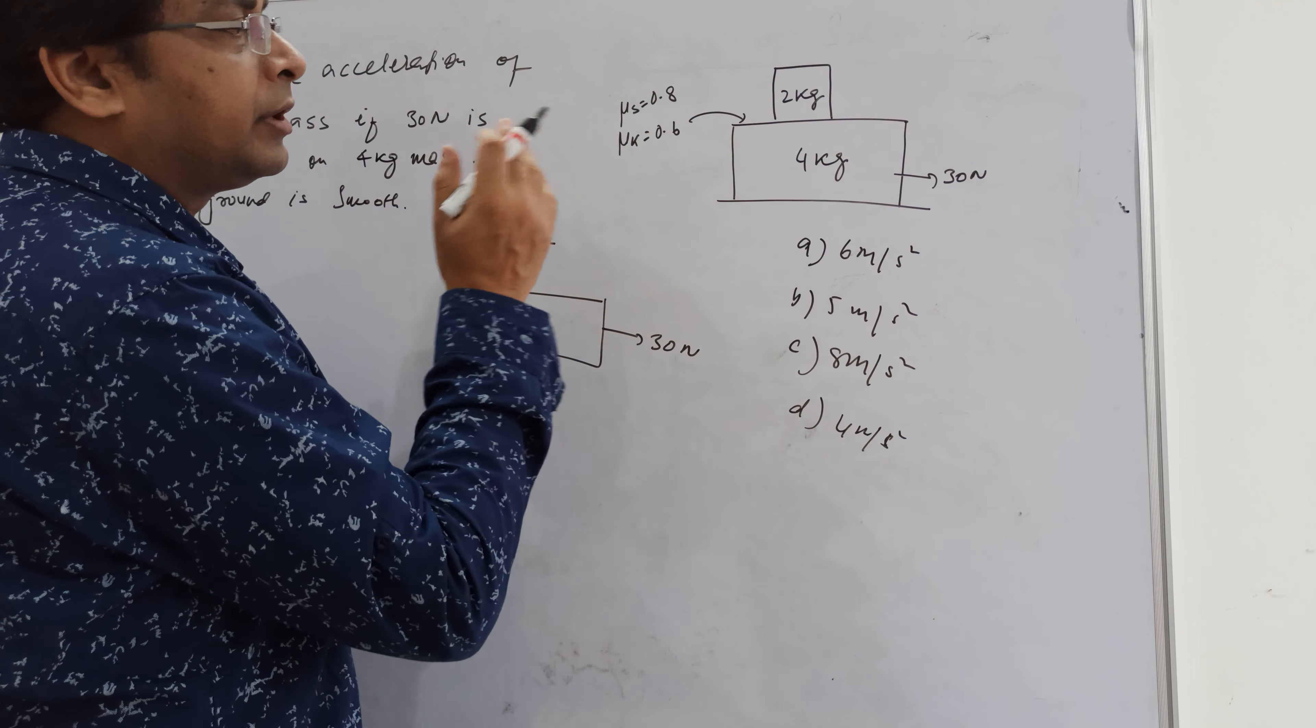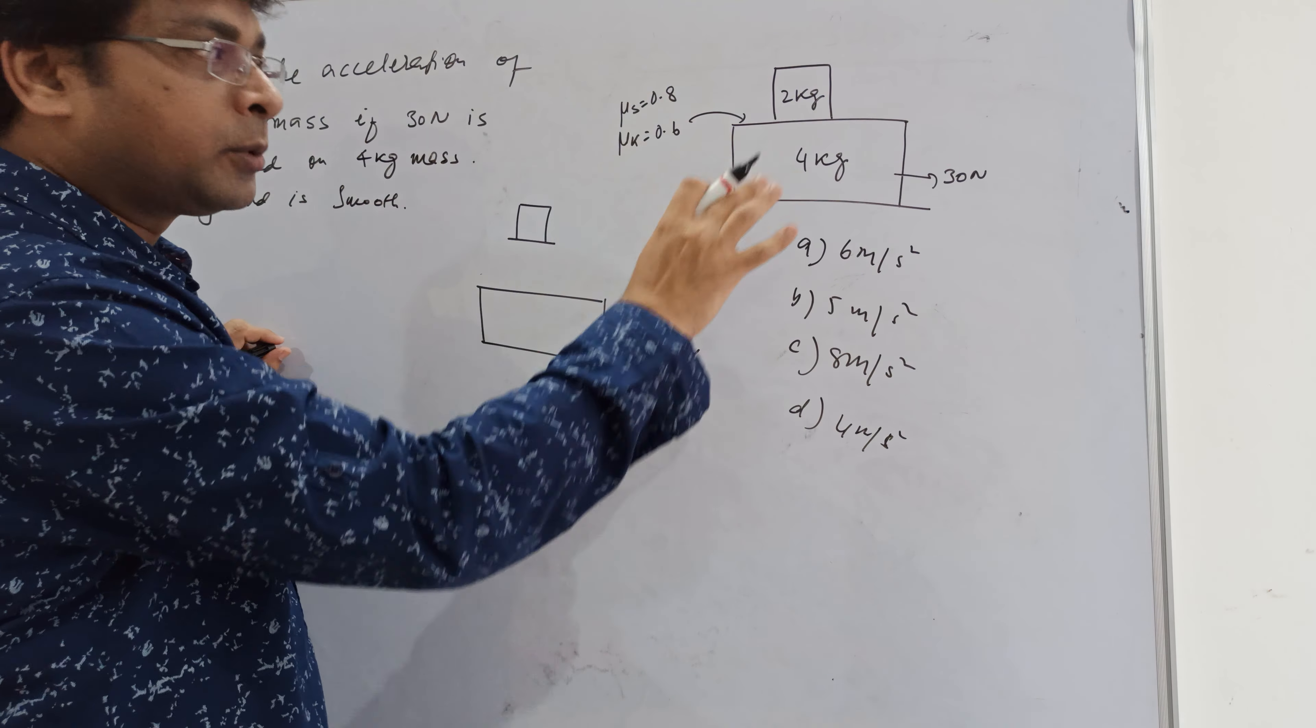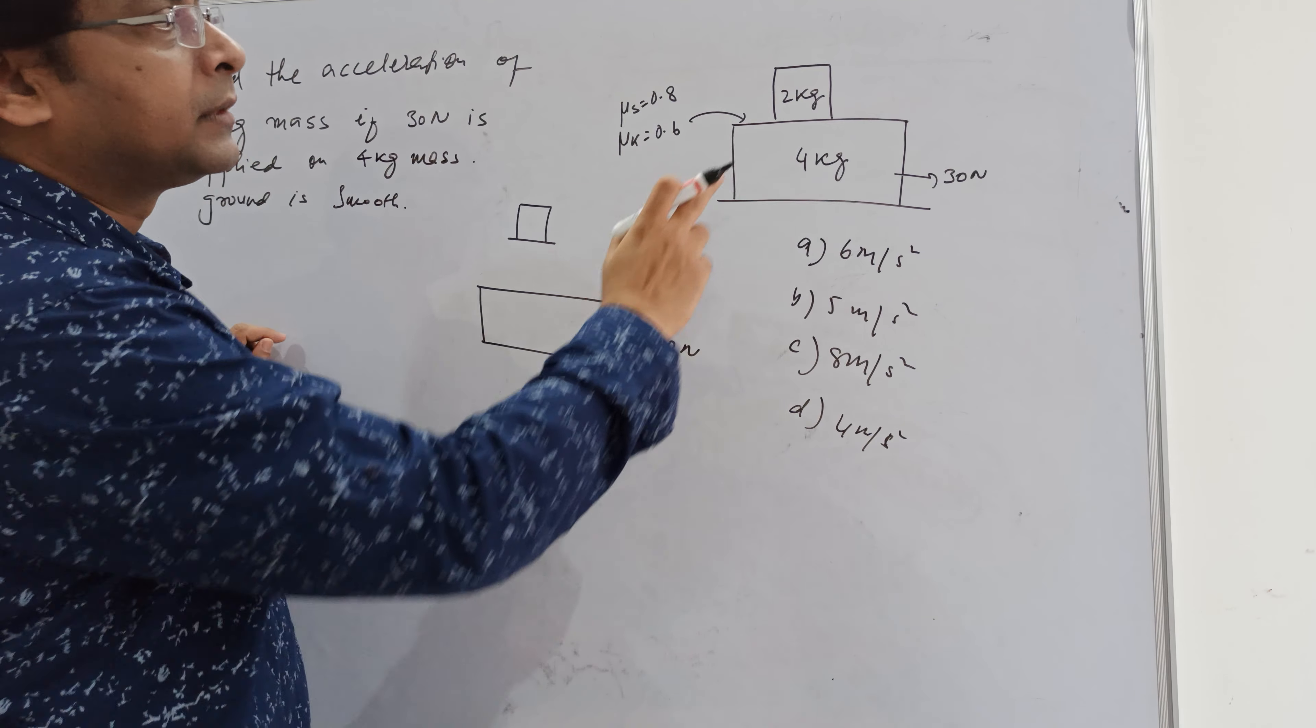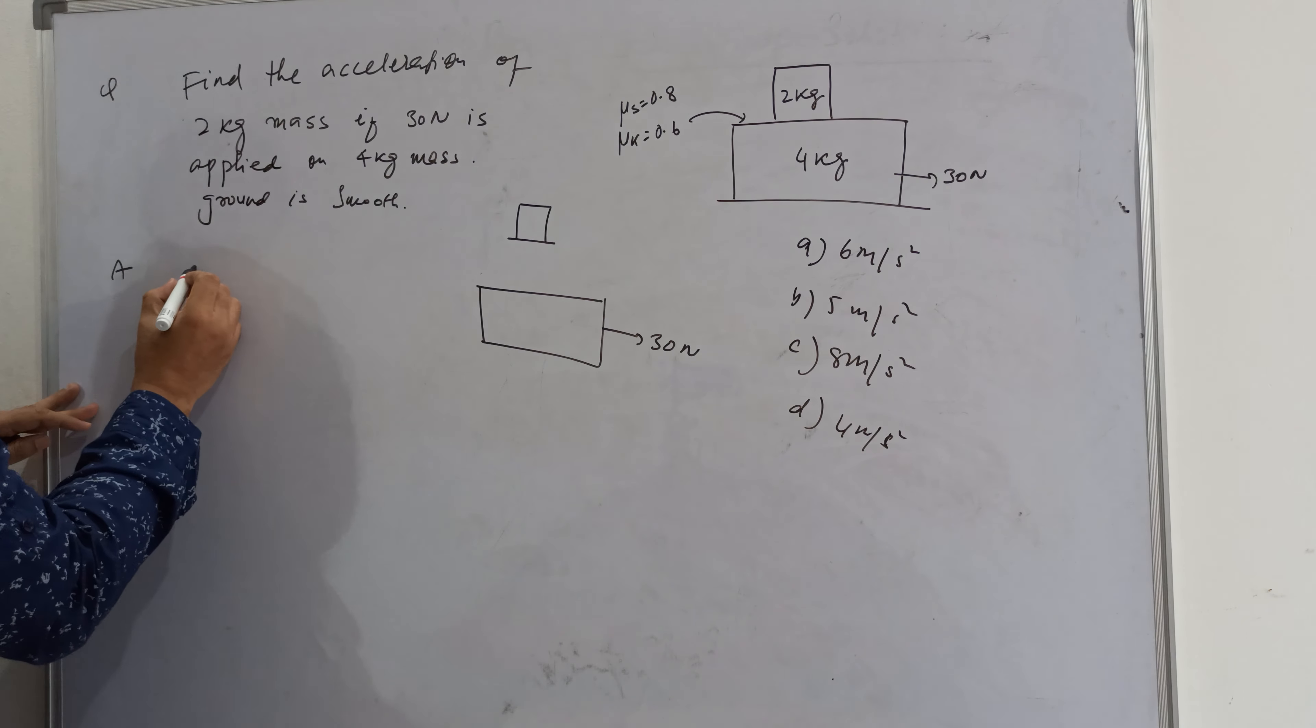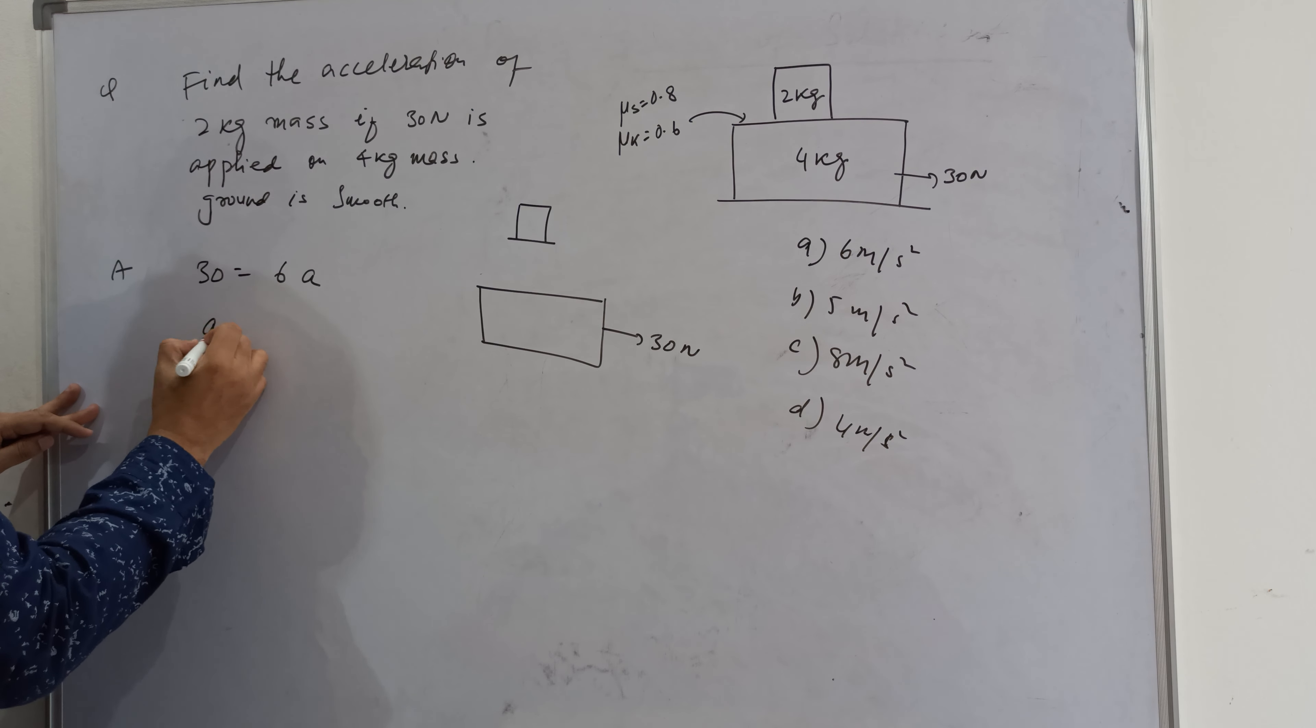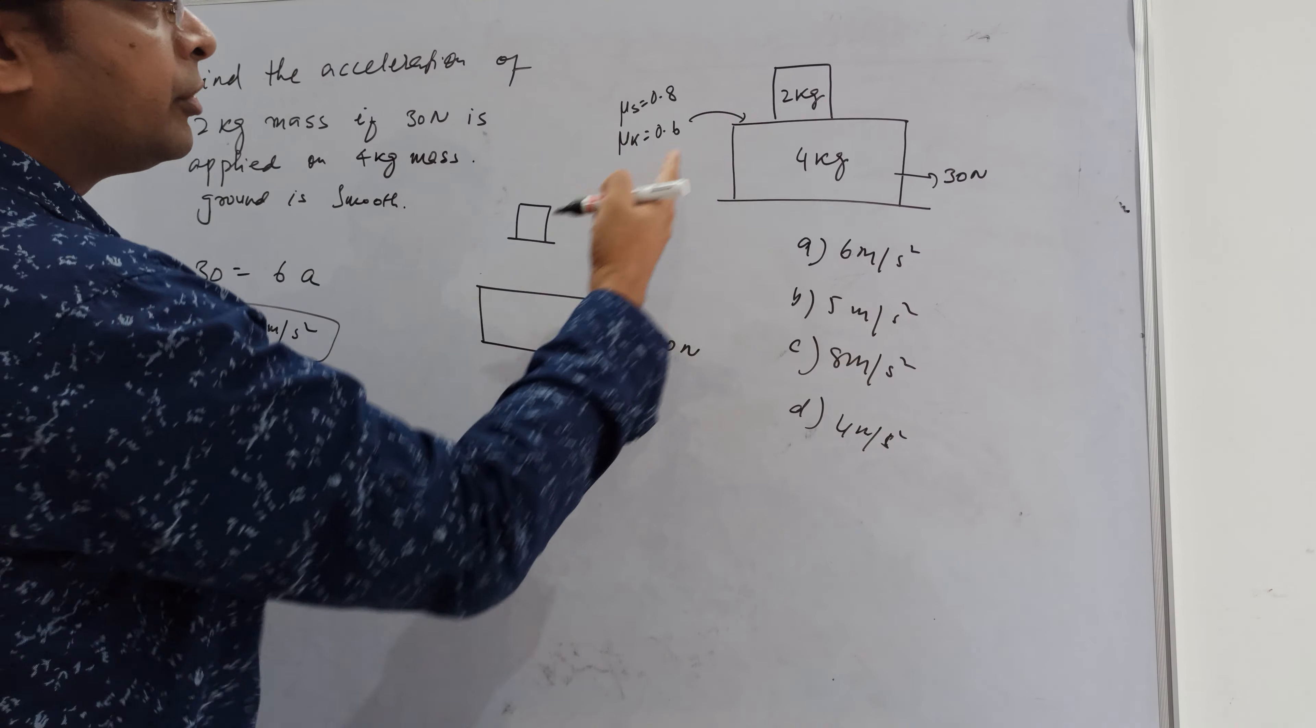So we have to decide which friction is acting. Suppose both are moving together, just assume it as a combined mass. So it is coming out to be 5 meter per second square.